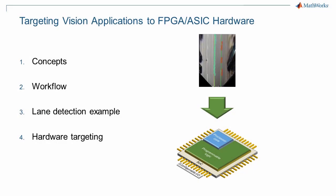Welcome to this four-part series on targeting vision applications to FPGA or ASIC hardware. A lane detection design will be used throughout, but the topics are applicable to designing any vision processing application for hardware. Part 1 discusses concepts to pay attention to, Part 2 gives an overview of the workflow, Part 3 illustrates specific considerations in the lane detection example, and Part 4 shows how to target the design for hardware.